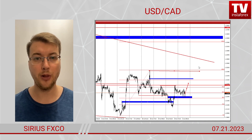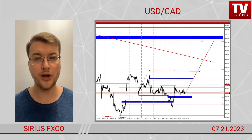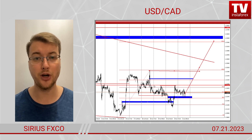Let's apply the Fibonacci grid. The price is currently at the 50% Fibonacci level. The highest target will be above the 161 Fibonacci level.